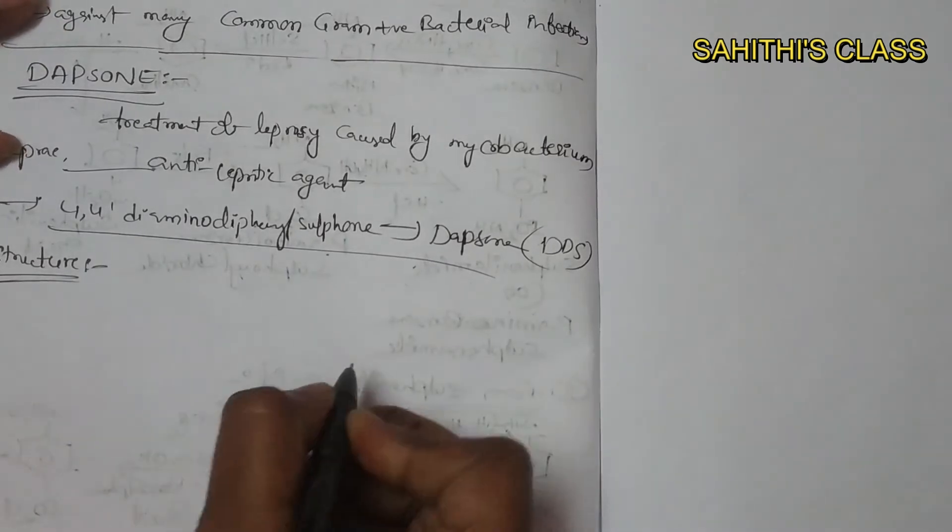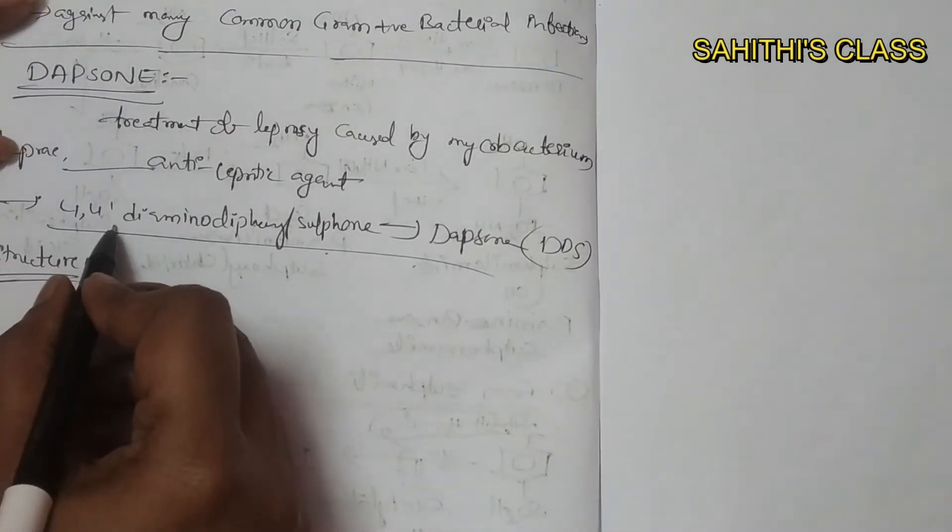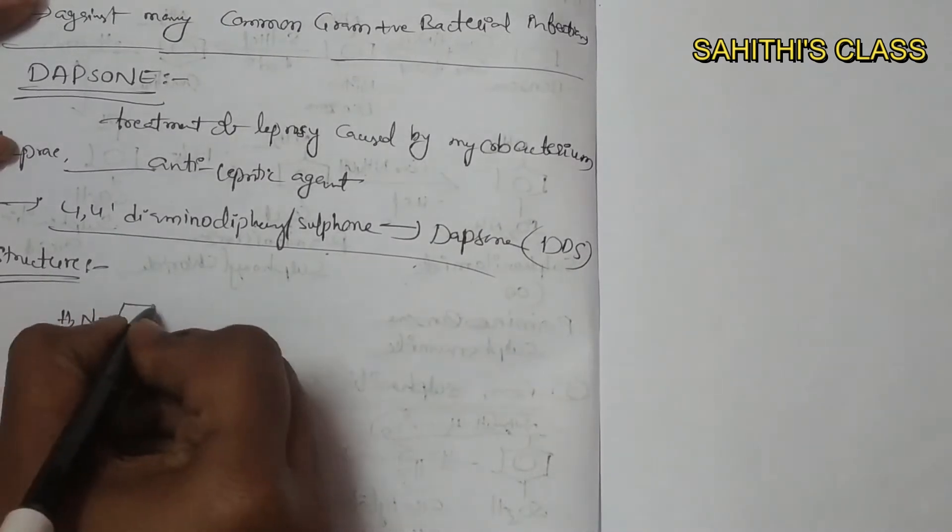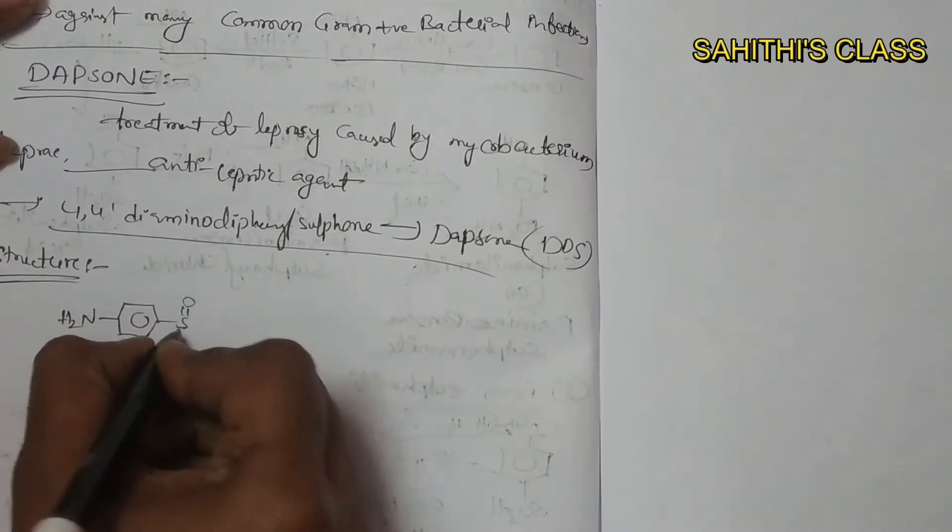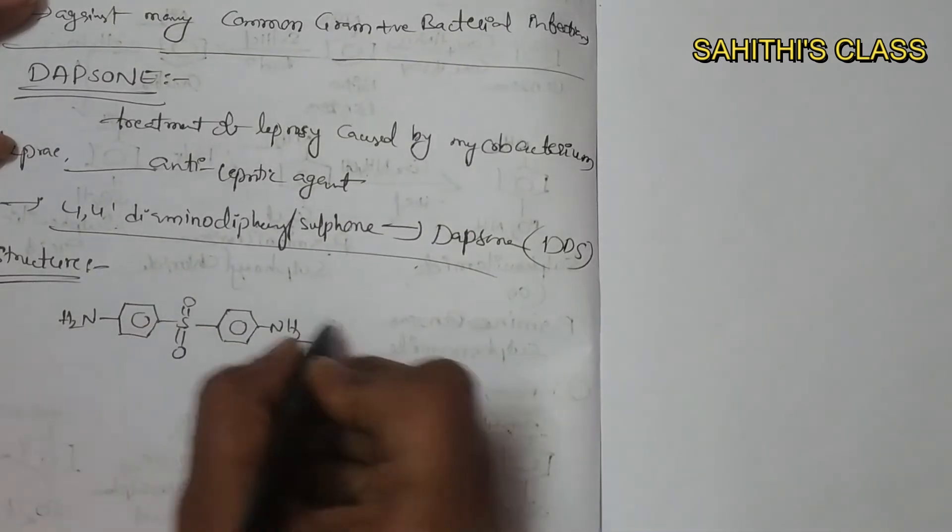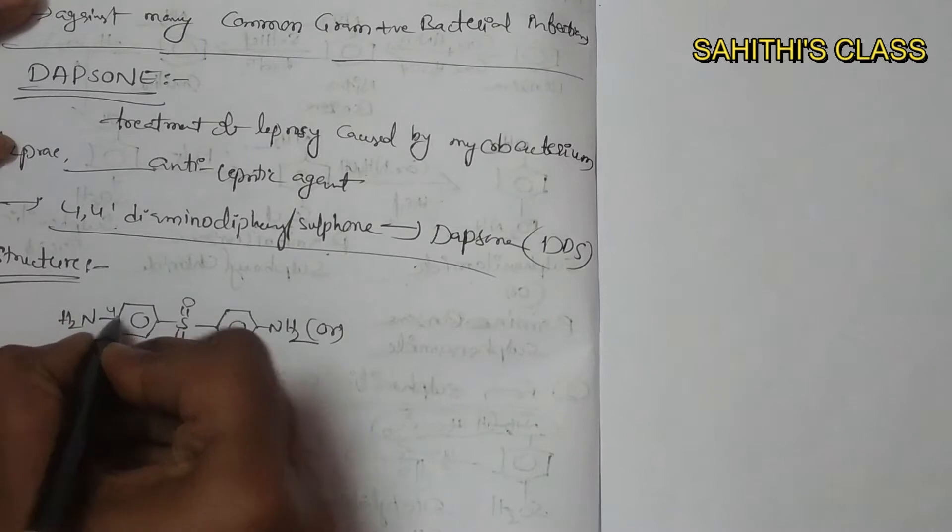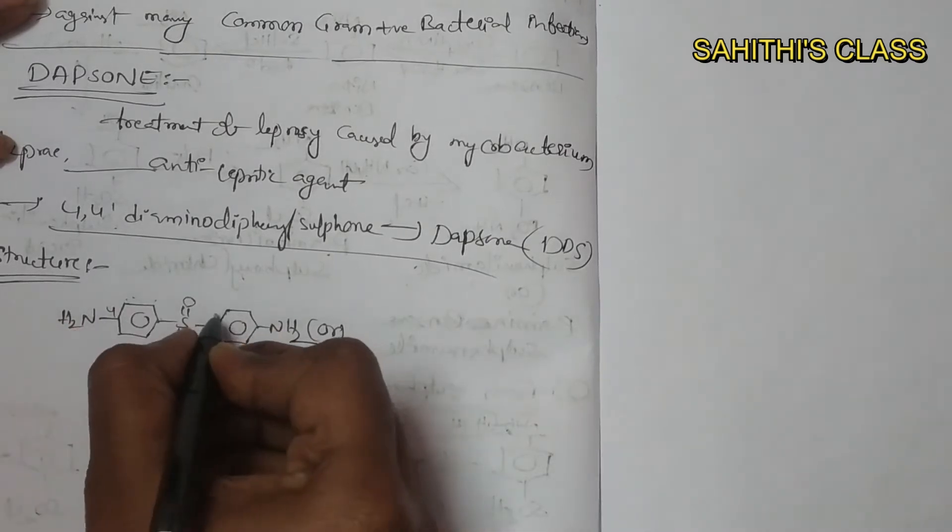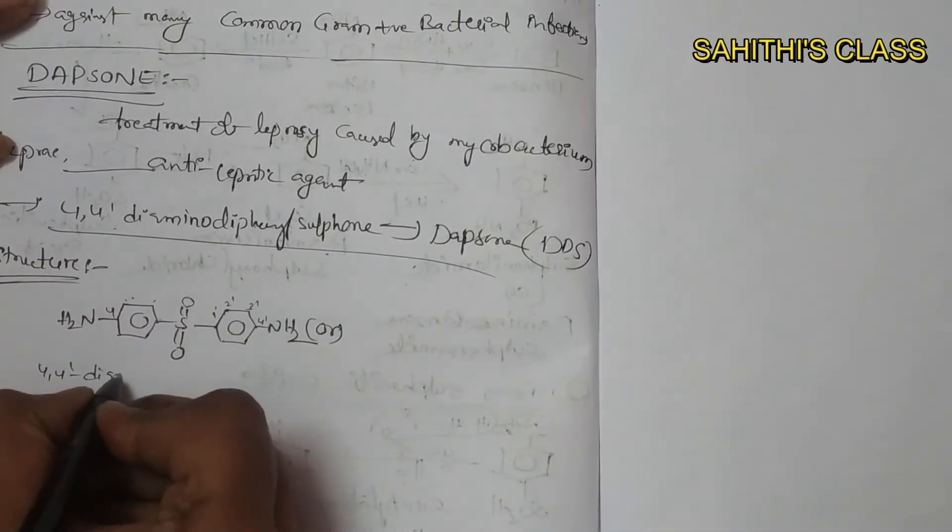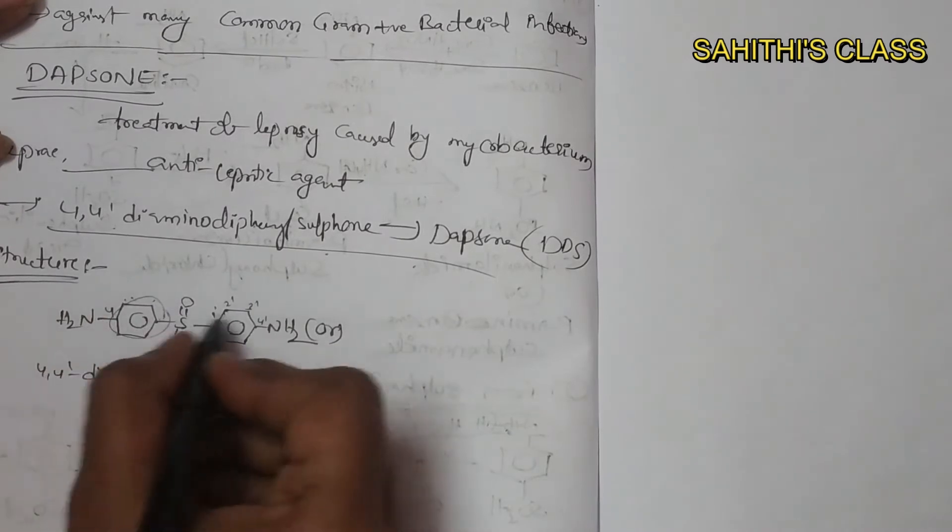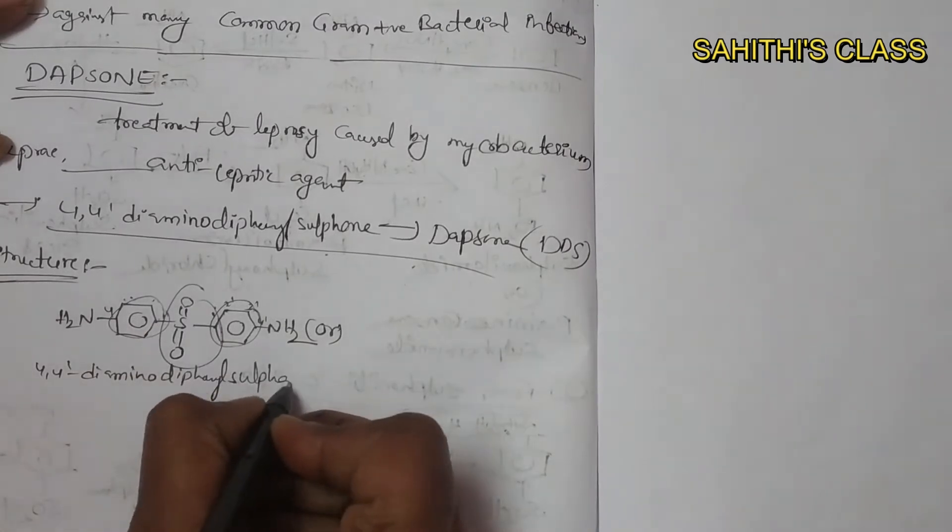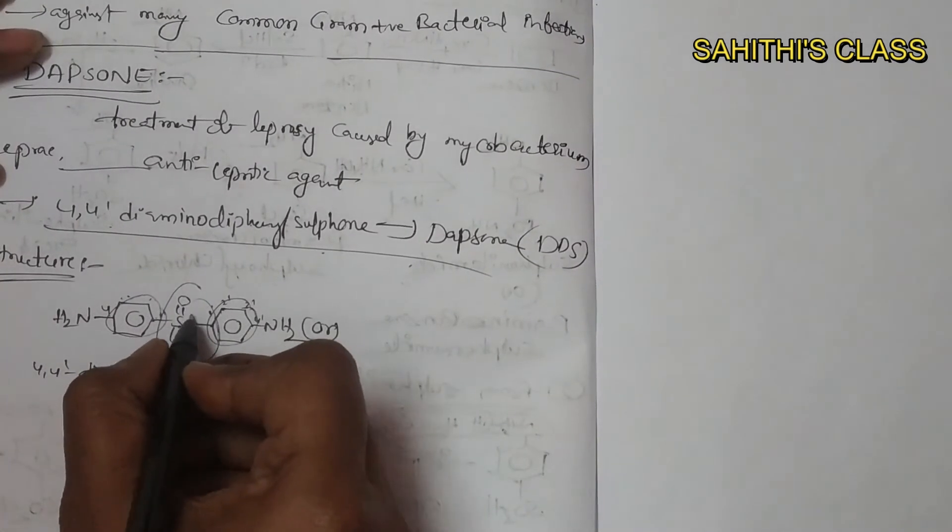So now the structure of dapsone. What is that 4,4-diamino diphenyl sulfone? So this is the structure of dapsone. It has two benzene rings. See here, this is fourth position: 1, 2, 3, 4. This is also 1, 2, 3, 4. So that's why 4,4-diamino. These are phenyl rings, two phenyl rings, so that's why diphenyl. This is sulfone.